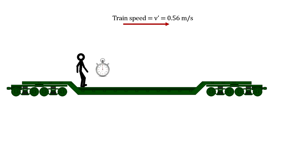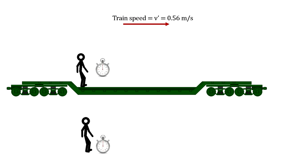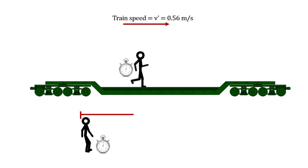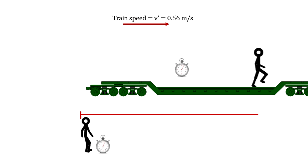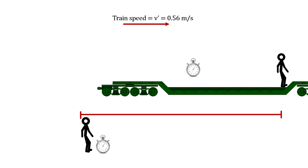Now picture the train car moving slowly to the right at 2 kilometers per hour, or 0.56 meters per second — as measured by a person on the ground. We repeat the measurement for the observer on the ground watching the train go by. He sets his clock to zero at the same time the rider does, marks the rider's starting spot, watches the rider move down the moving car, stops the clock when the rider does, and marks the second point. In this example, the rider went 5.8 meters in the same 5 seconds, for a speed of 1.16 meters per second.